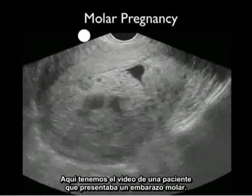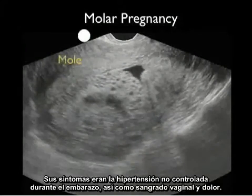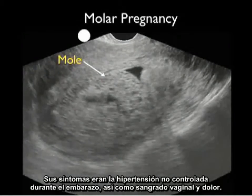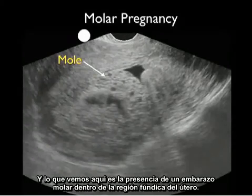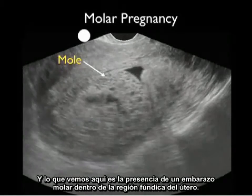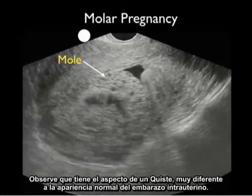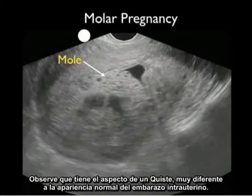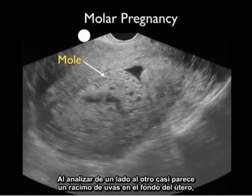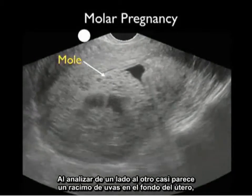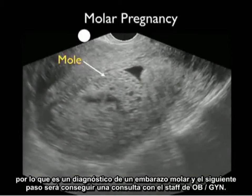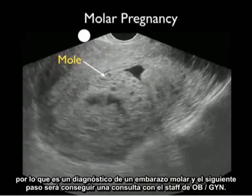Here's video from a patient who presented with a molar pregnancy. Her presenting symptoms were uncontrolled hypertension during the pregnancy, as well as vaginal bleeding and pain. What we see is the presence of a molar pregnancy within the fundal region of the uterus — notice it has a cyst-like appearance, very different from the normal appearance of an intrauterine pregnancy. As we scan back and forth, it almost looks like a bunch of grapes within the fundus of the uterus. My next move was to get an OBGYN consultation stat.